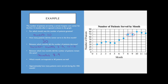Which month corresponds to 40 patients served? Go from 40 on the vertical and find the first point — that's month three. Approximately how many patients were served during the tenth month? That would be 80 because the tenth month lines right up on the grid, so you just read the number directly off the grid.